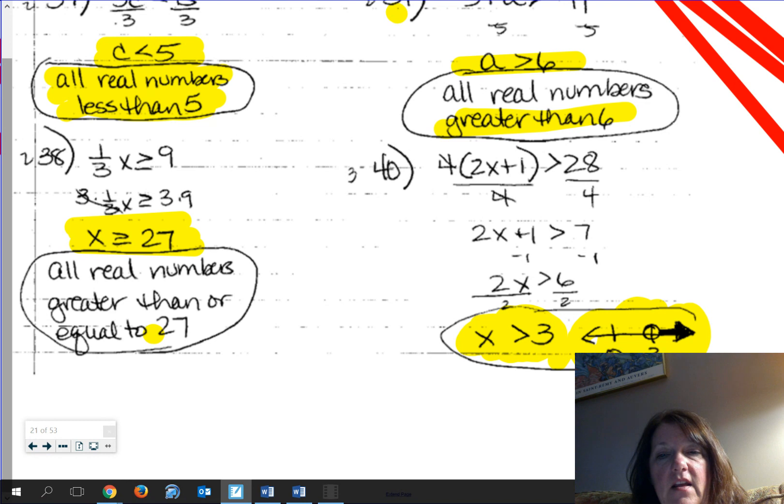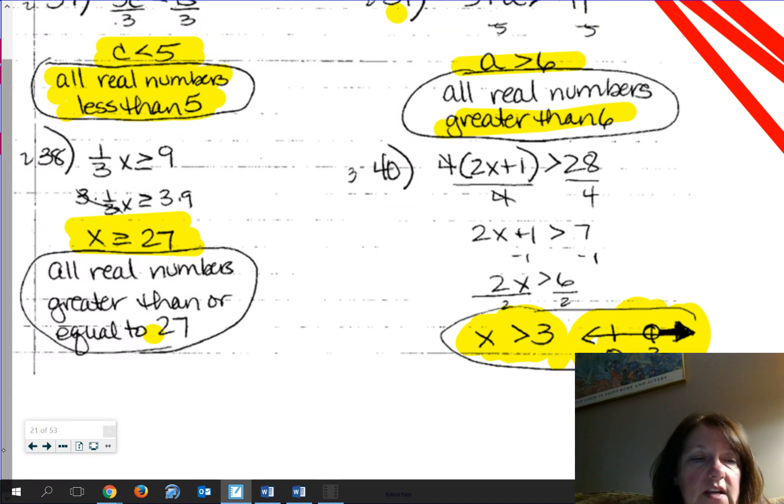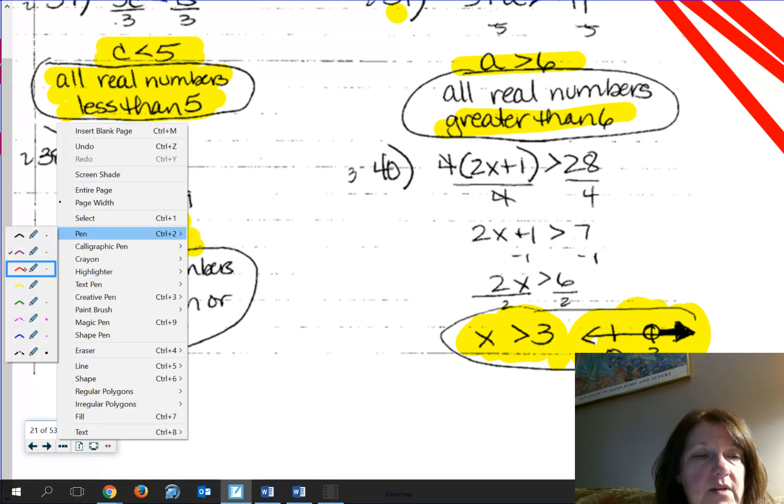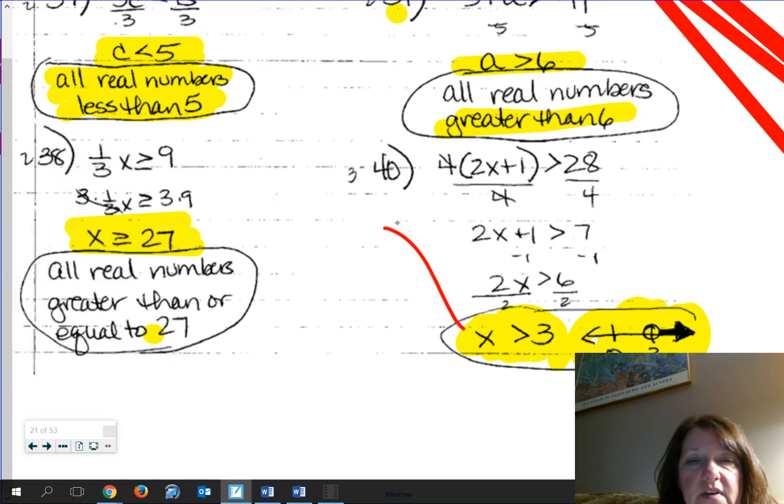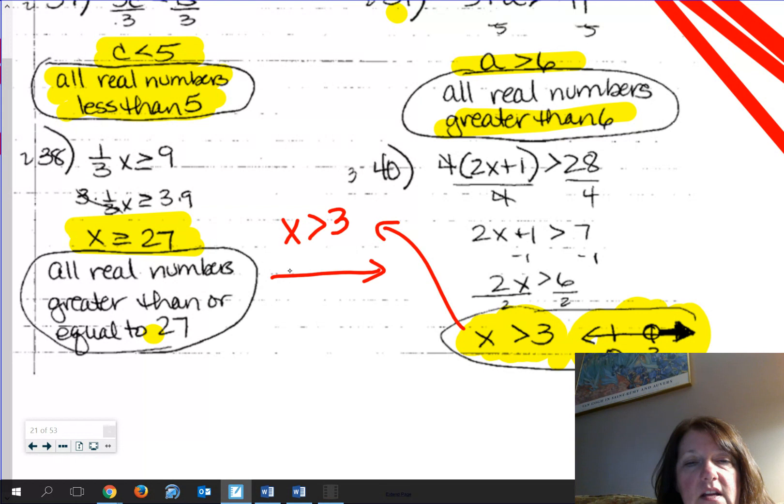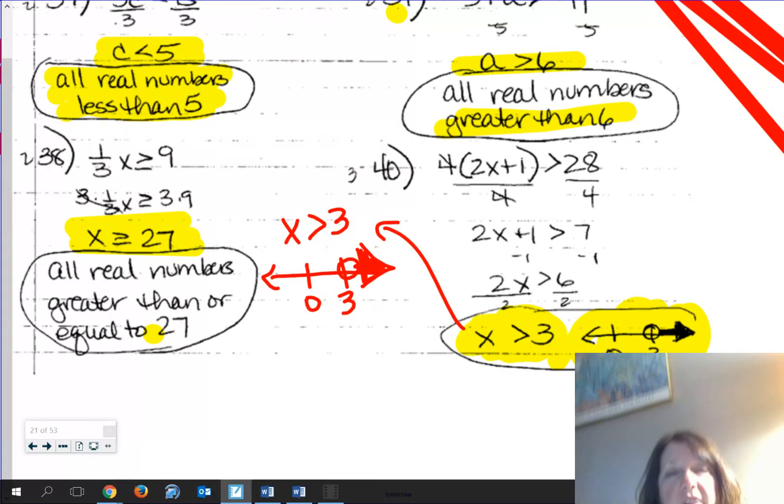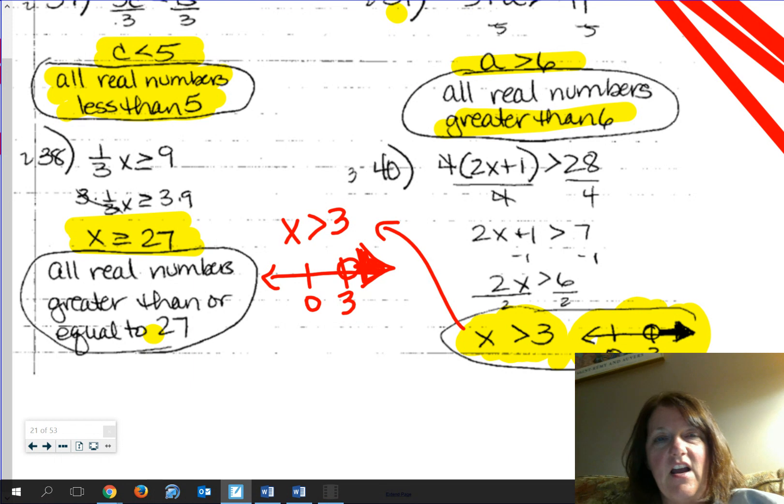Let me rewrite it over here. For number 40, you should get x > 3. Which means you have an open circle at 3. And then we're going to shade to the right. So fill in the arrow head and go from there.